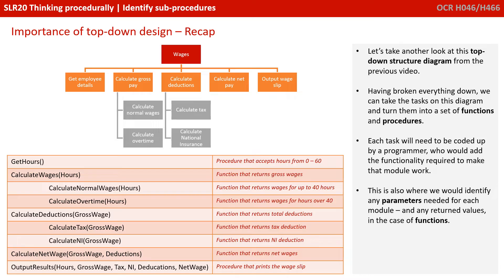This is also where we would identify any parameters needed for each module, and any return values in the case of functions. You can see an example of a completed table at the bottom, that shows the various names for these modules, whether they're functions or procedures, parameters that will be passed in and their names, and any return types.